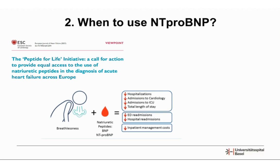A very important viewpoint published in the European Journal of Heart Failure in 2021 on the Peptide for Life initiative highlights the importance of NT-proBNP in patients with acute dyspnea. Reviewing several studies, it concluded that measurement of natriuretic peptides decreased hospitalization rates, reduced admissions to cardiology and ICU, and shortened total length of stay — a safer approach for patients and one that reduces costs through less inpatient management.